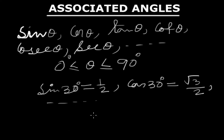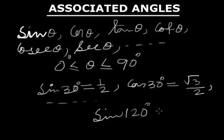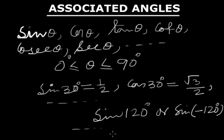But here some questions arise. The question is: is it possible to find the value of sine 120° or sine of minus 120°, or any angle which is greater than 90° or any angle which is lesser than 0°, and their corresponding values with the trigonometrical ratio? Yes, it is possible to find all the values of angles with the help of trigonometrical ratios.